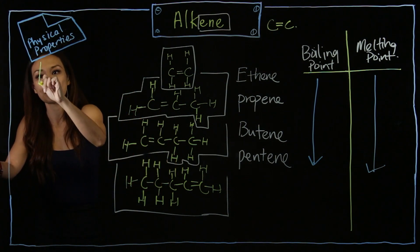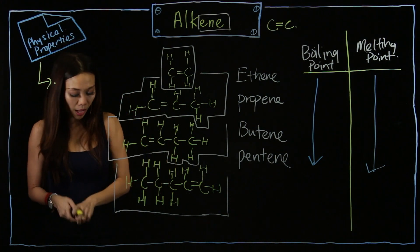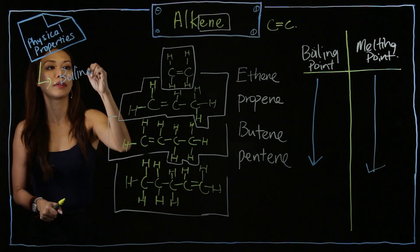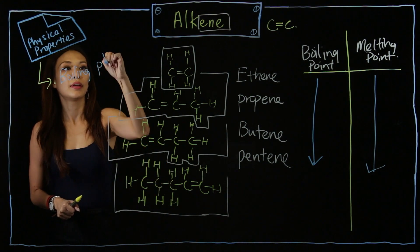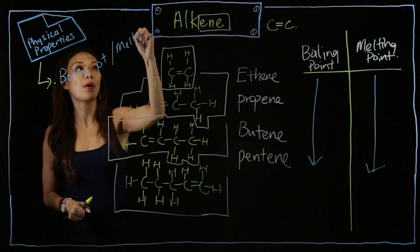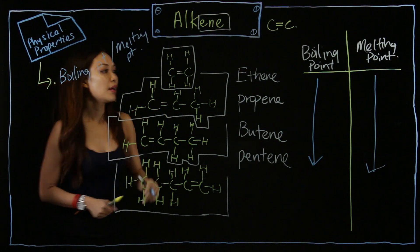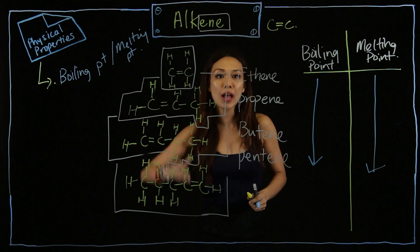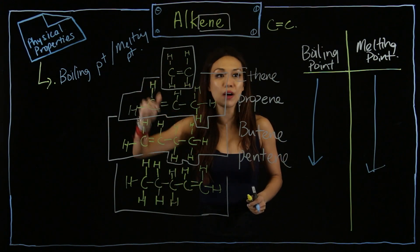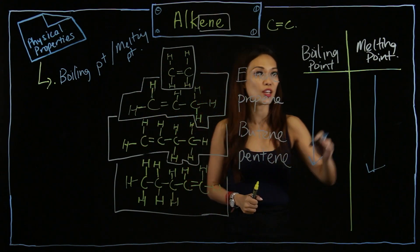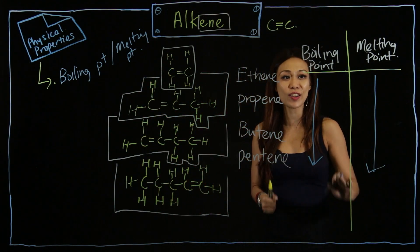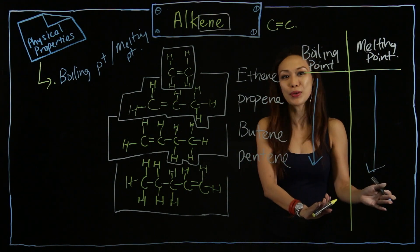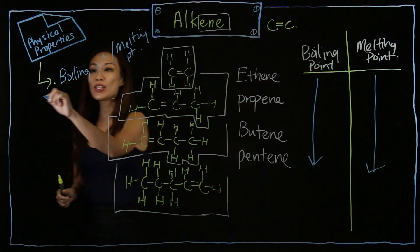Now, for physical properties, our main focus is always on their boiling point and their melting point. So let's take a look here. As you go down the group, you also notice that the number of carbon increases. So, boiling point, as you can see the arrow here, definitely increases. Melting point also increases.